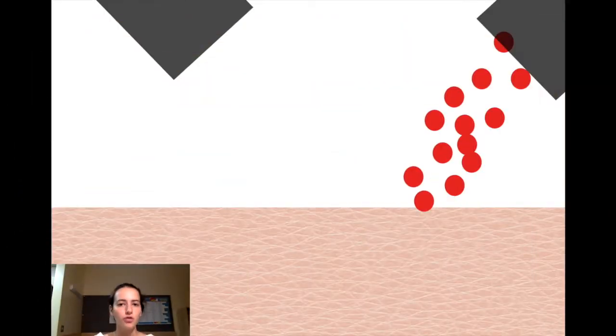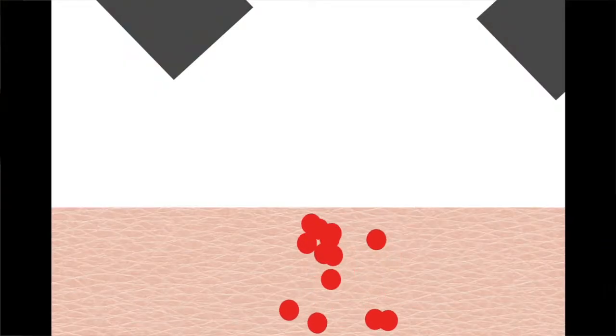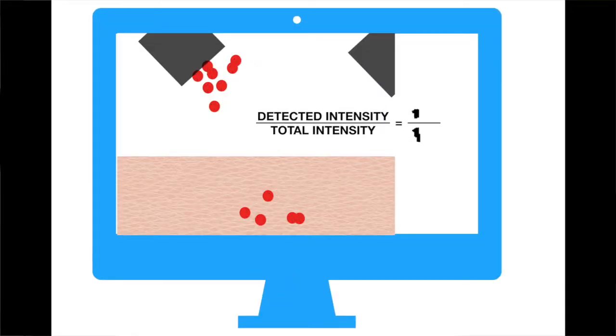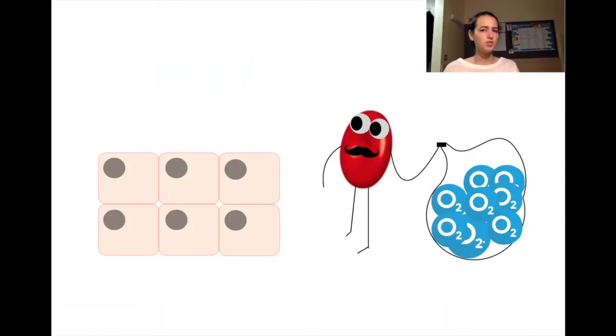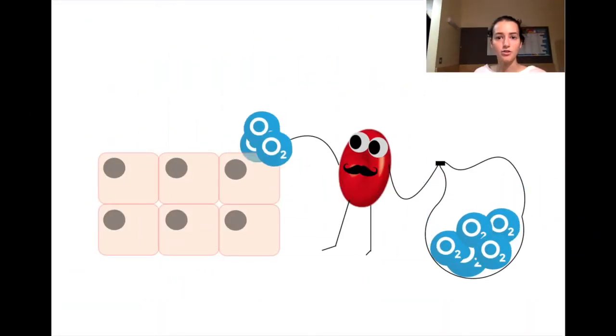The way DOI actually works is by first shining infrared light on the skin. Once the infrared light reaches the skin, some of it is absorbed, and some of it scatters. The light that scatters then reaches a detector, which calculates how much the intensity of the infrared light has decreased. Hemoglobin carries oxygen to the cells, and it turns out that hemoglobin is also a good absorber of infrared light.